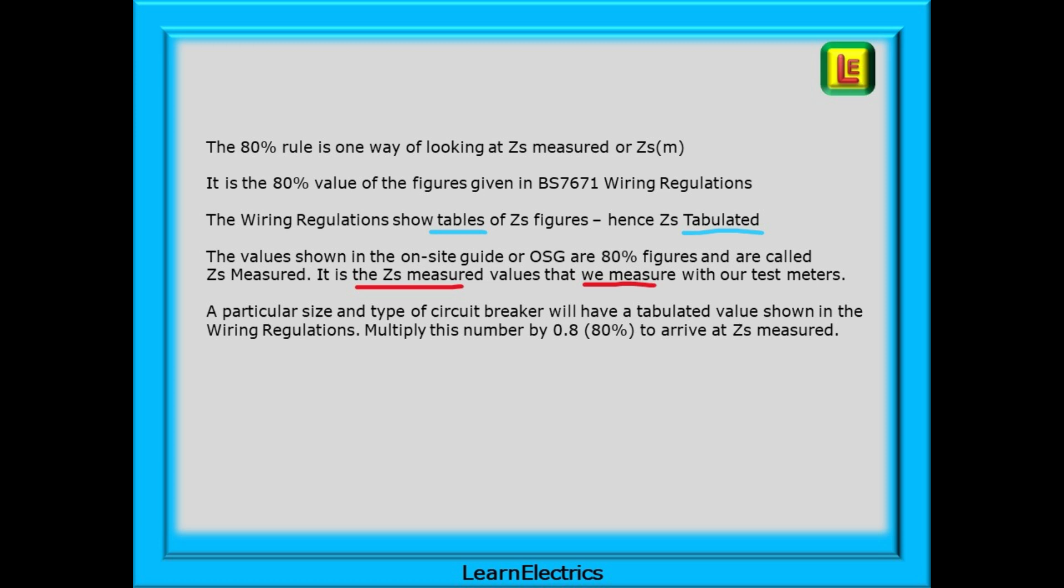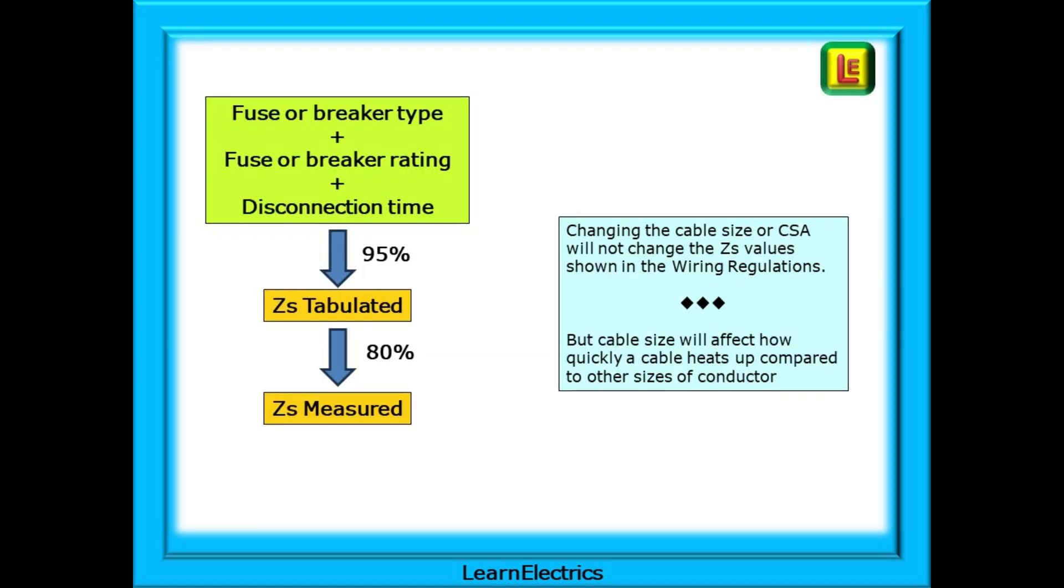A particular size and type of circuit breaker will have a tabulated value shown in the wiring regulations. Multiply this number by 0.8 or 80% to arrive at ZS measured. So this is what we've done. The fuse or breaker type plus the fuse or breaker rating plus the disconnection time and making an allowance for voltage changes will determine the tabulated ZS for a particular device. If we then multiply by 80% for temperature variations we arrive at a number for ZS measured.